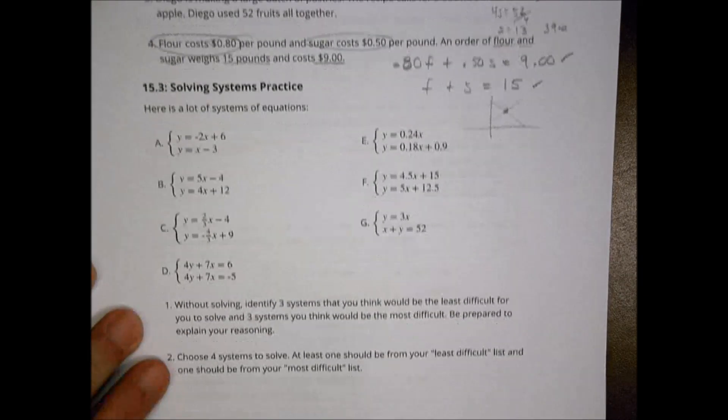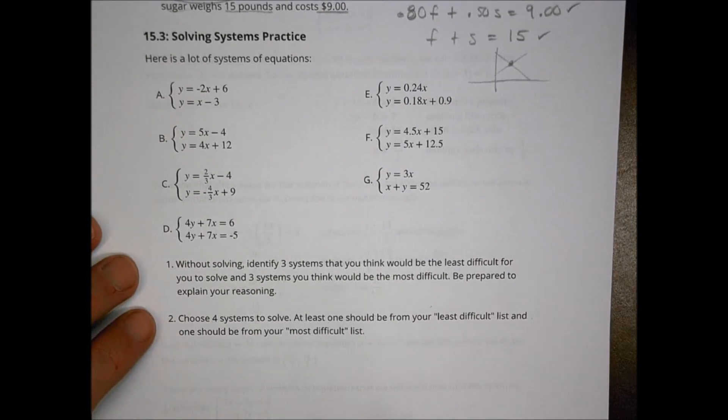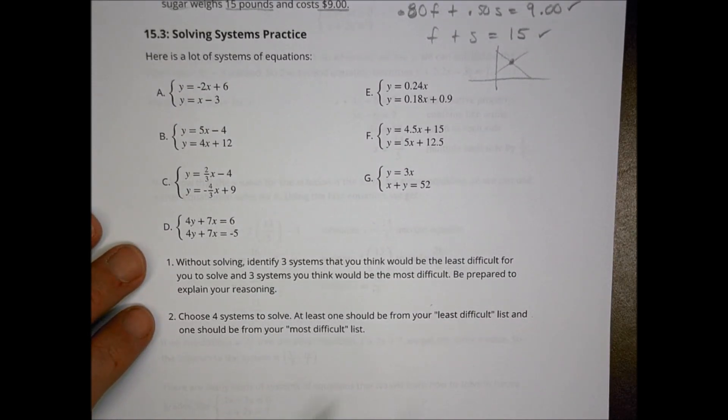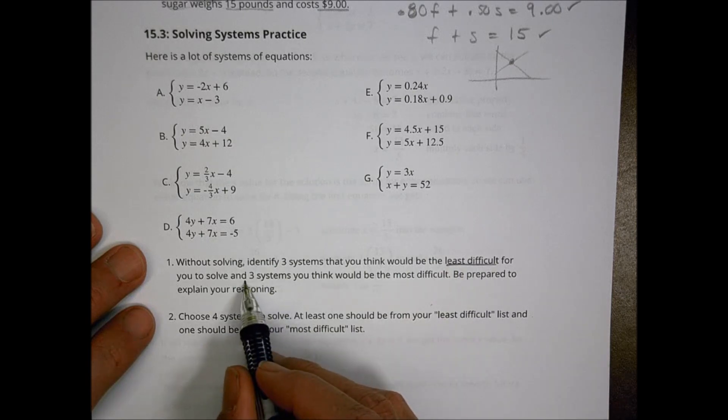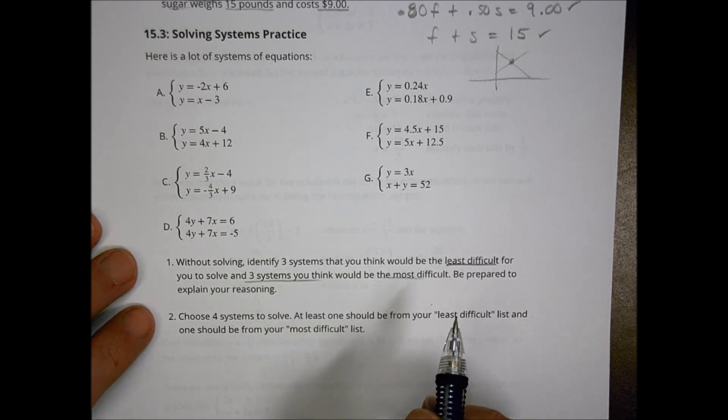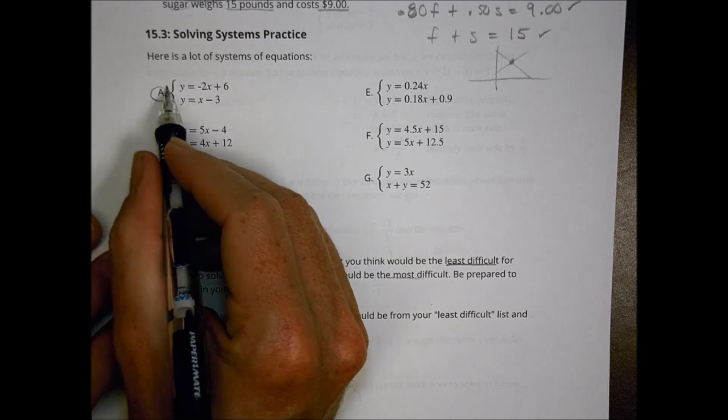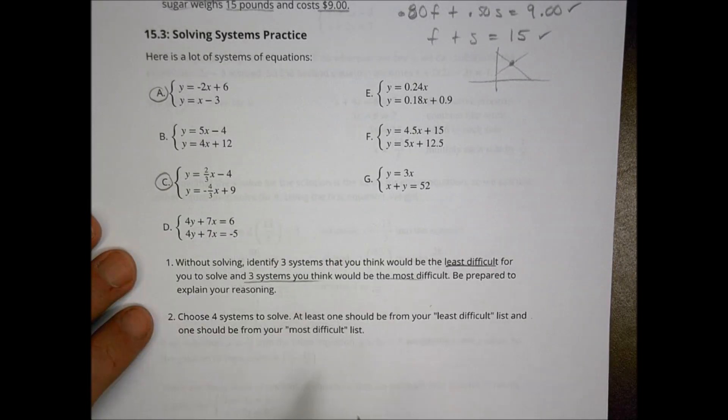This next one here, you have several choices, and it says to pick three you think would be least difficult and three the most difficult, and then solve some of them. I'm going to go ahead and solve just two for right now. I'm going to solve A and I'm going to solve C. I'm going to solve A because it looks pretty basic.